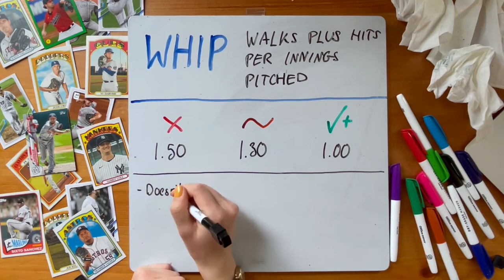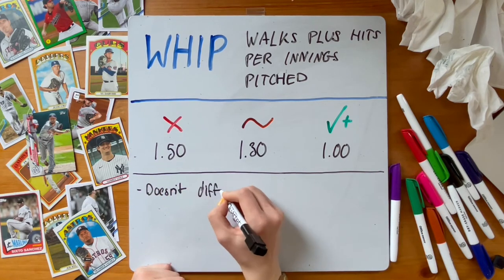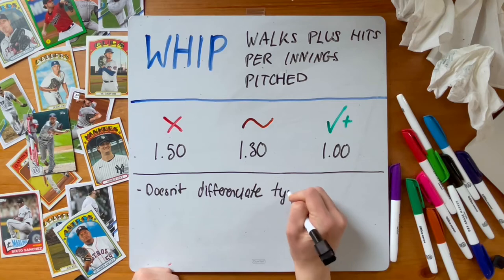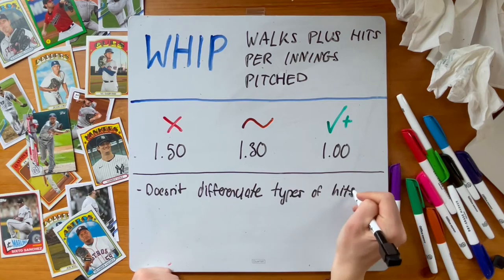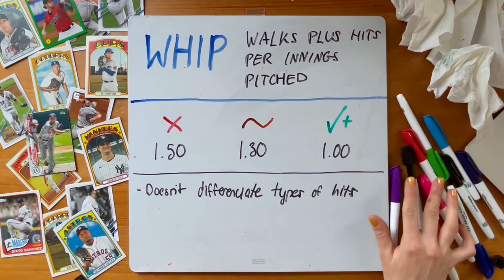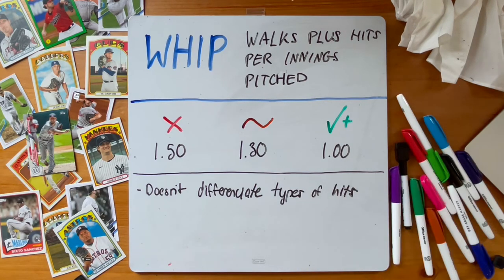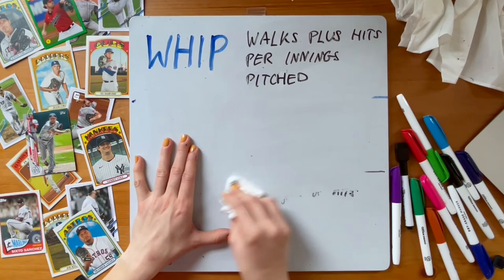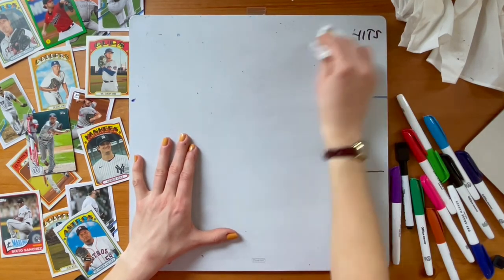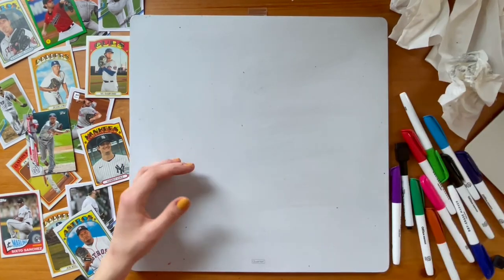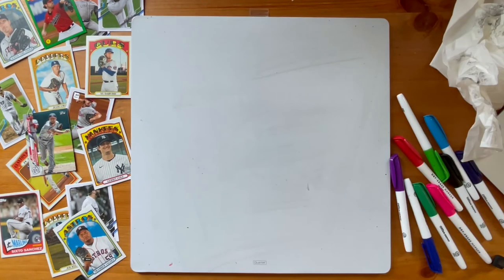However, keep in mind that WHIP does not differentiate the way in which a hitter reaches base. He either does or does not in that calculation, but we know that a walk is much less harmful than a home run. WHIP also doesn't count hits by pitch, errors, and fielder's choice against a pitcher.